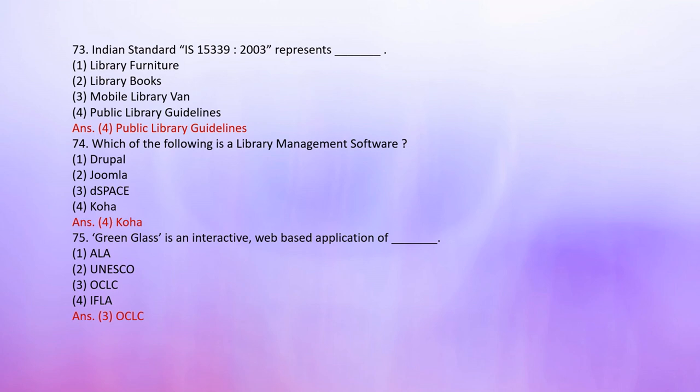Number 73: Indian Standard IS 15339-2003 represents — 1. Library Furniture, 2. Library Books, 3. Mobile Library Van, 4. Public Library Guidelines. The correct answer is 4: Public Library Guidelines. Number 74: Which of the following is a library management software? 1. Drupal, 2. Zoomlar, 3. Dispatch, 4. Koha. The correct answer is Koha.